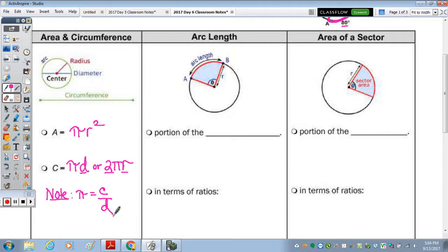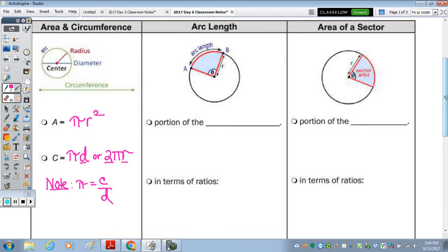So using those two formulas, we can find the arc length. The next column, arc length is the distance along an arc, and the arc of a circle is right here. So you want to walk along the circle from point A to point B. That is arc length. That arc length is a portion, or a fraction, of the circumference of the circle.